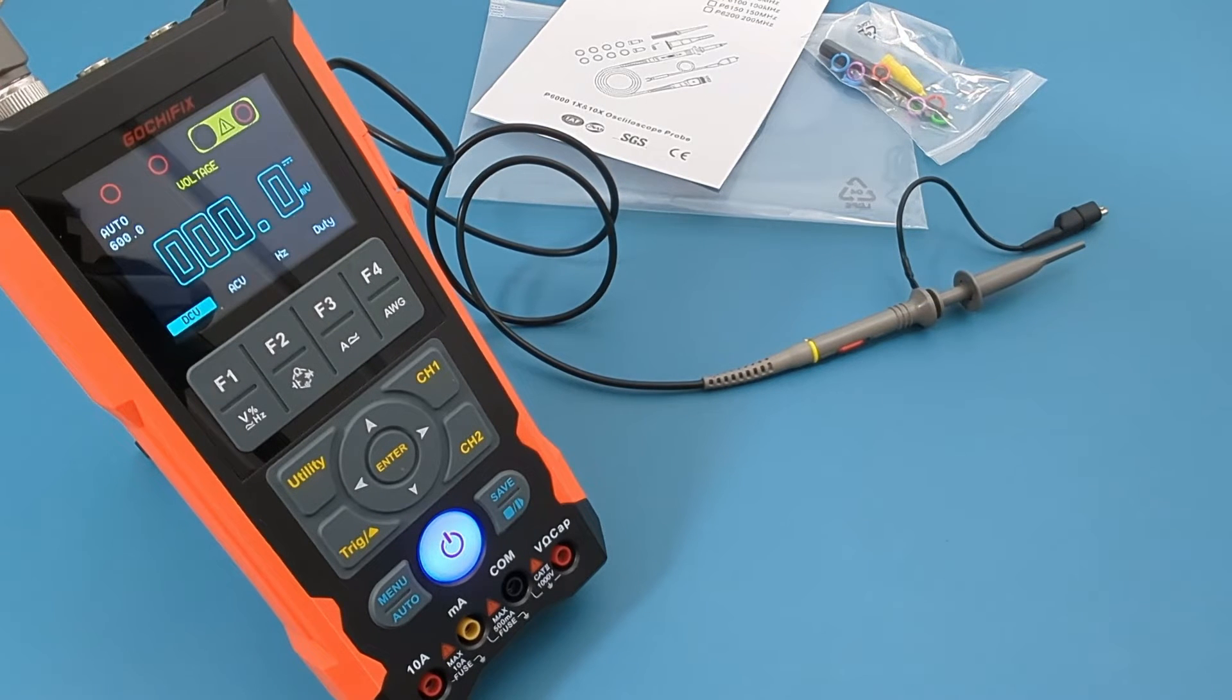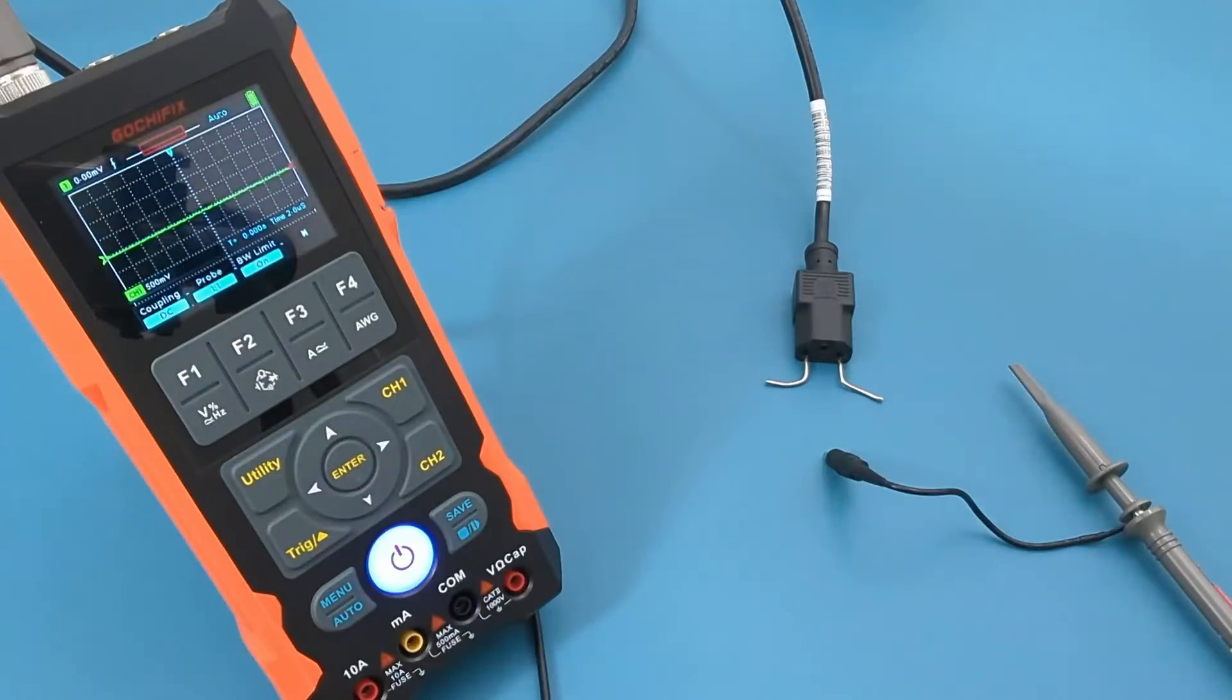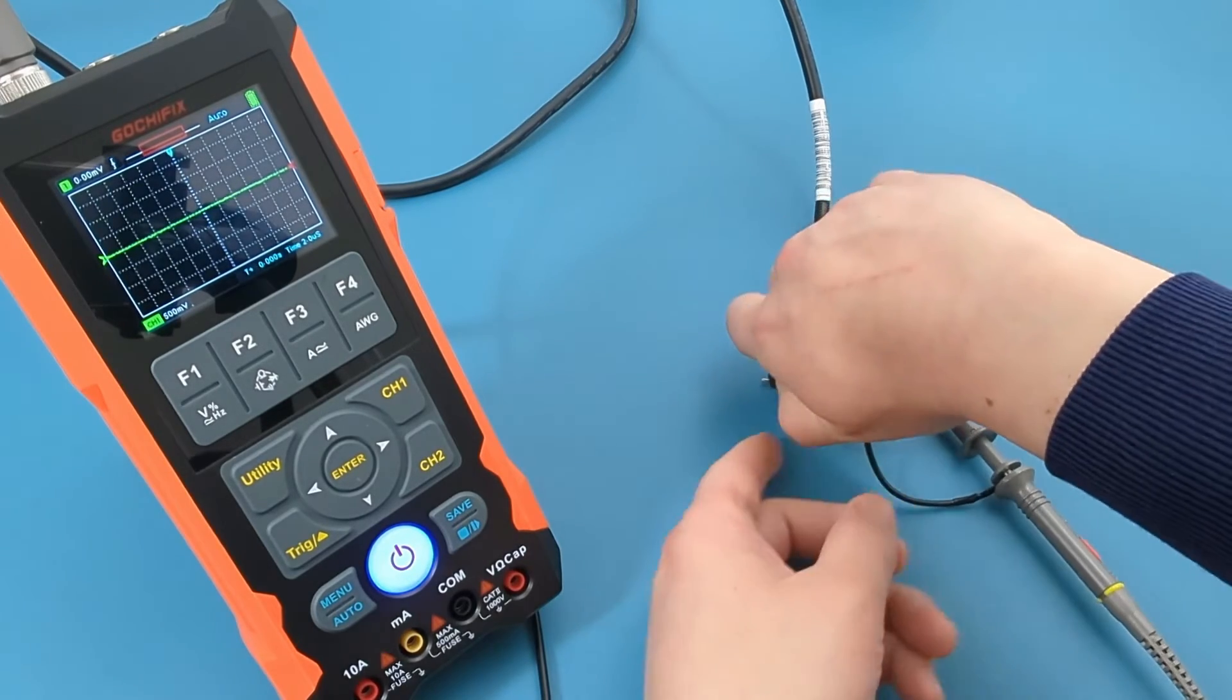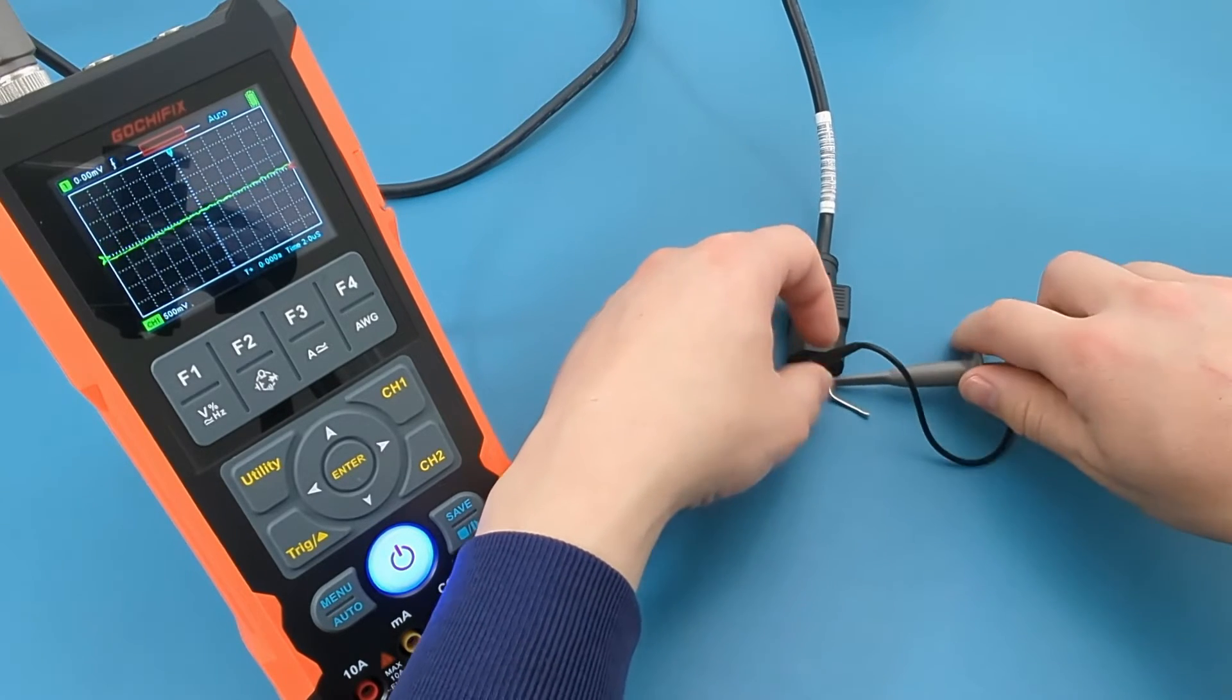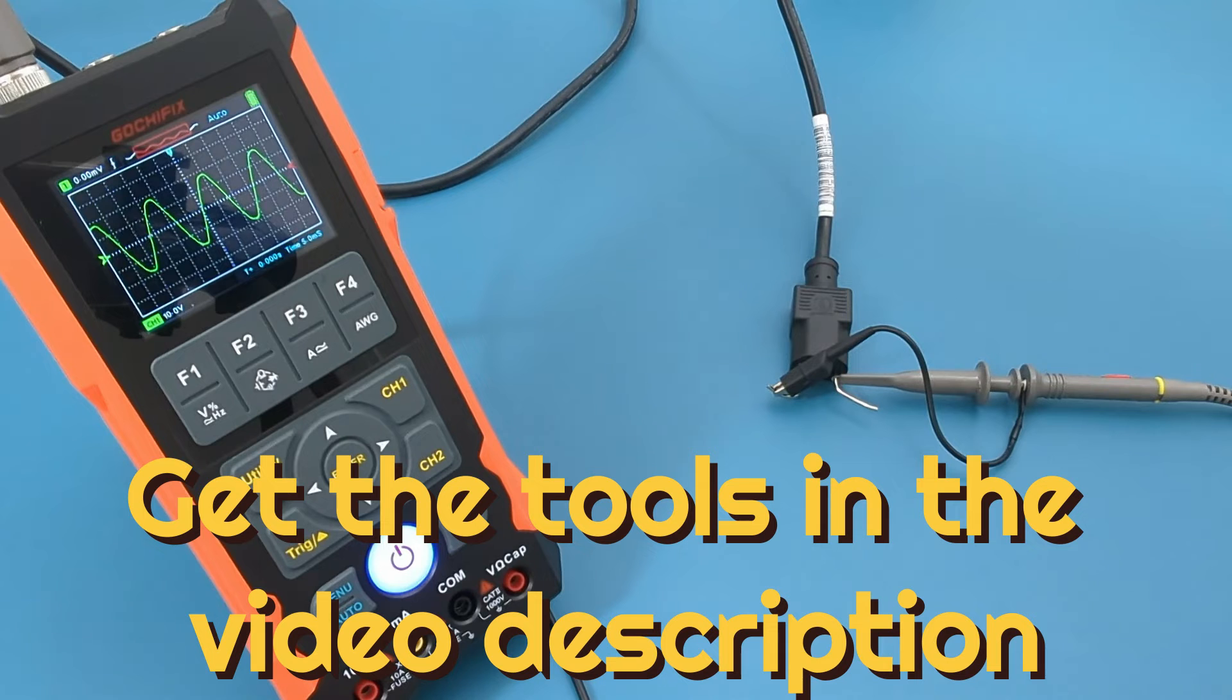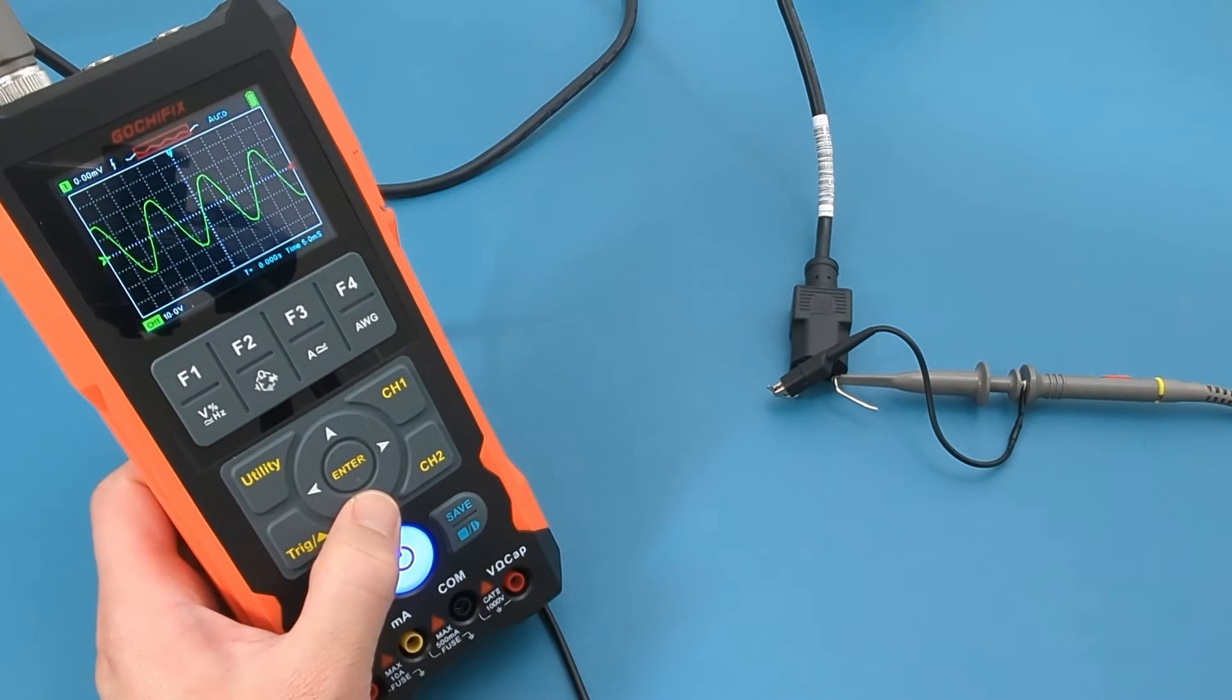Press the CH1 button to toggle to the oscilloscope mode. We have a power cord connected to an outlet. Attach the ground lead to one end of the wire. Attach the probe tip to the other end of the wire. Press the auto button to set the vertical and horizontal amplitude automatically. You get stable periodic signals using the automatic setting. You can adjust the waveform by pressing the arrow keys.